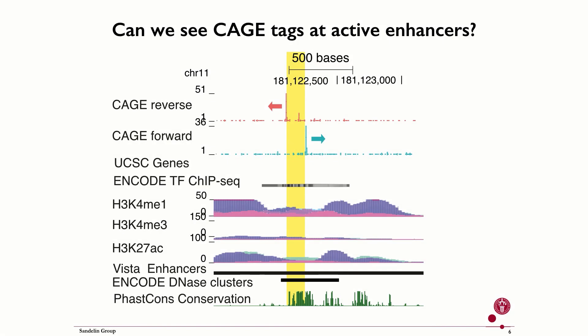This example showcases a known enhancer from the Vista database. It has the features we may expect to observe in enhancers: it is highly conserved, DNA is sensitive, has H3K27 acetylation and H3K4 monomethylation marks but not H3K4 trimethylation, and also contains summary ChIP transcription factor peaks. Finally, we note two CAGE peaks that delineate a narrow region right in the middle, just where the conservation is the highest. These are bidirectional enhancer RNAs.